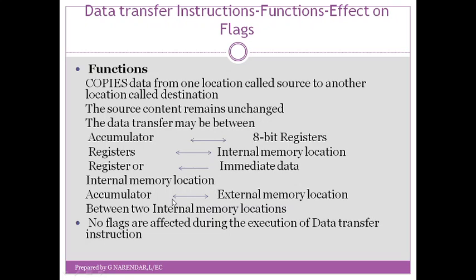There is one more type: data can be copied from the accumulator to an external memory location, or data can be copied from an external memory location to the accumulator. When external memory is added to the 8051, whatever data is present in the external memory location can be copied to the accumulator, and from the accumulator data can be copied to external memory. Additionally, we can copy data between any two internal memory locations.